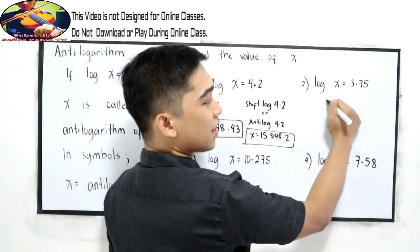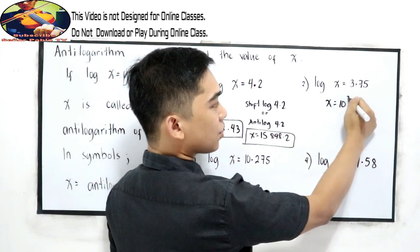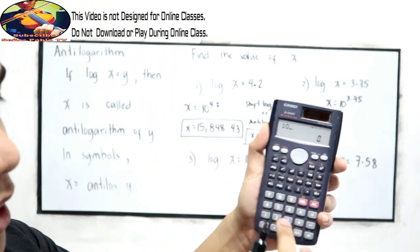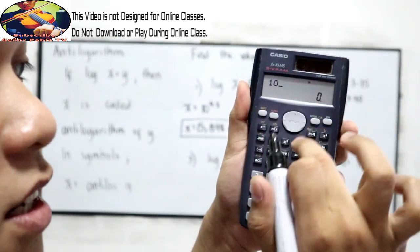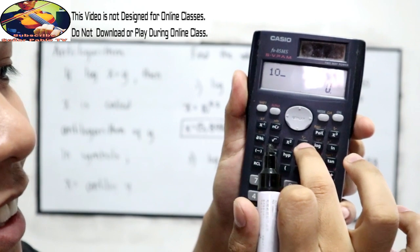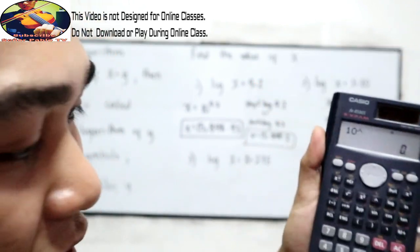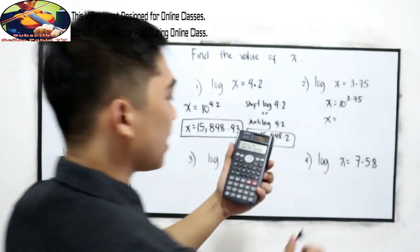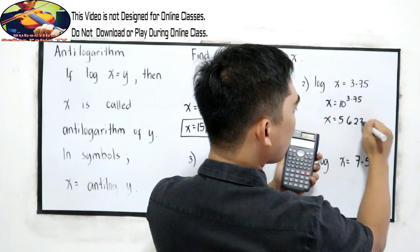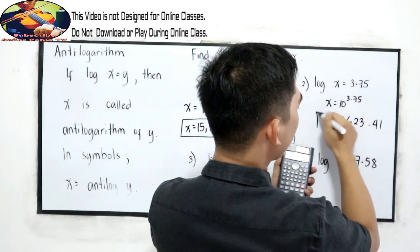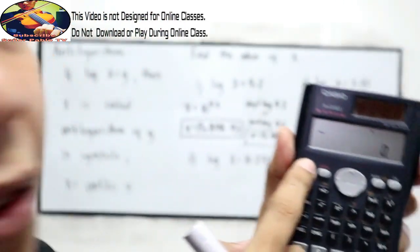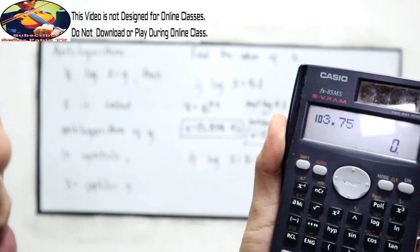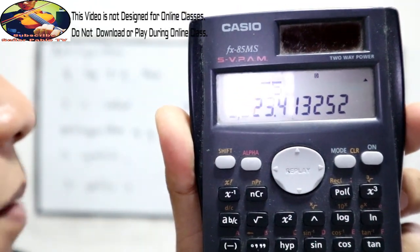For number 2, x is equal to 10 raised to 3.75. Just press in your calculator 10, then the exponent symbol, then 3.75. The answer is 5,623.41. Or you can use shift, log, then 3.75 — still the same answer, 5,623.41.